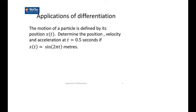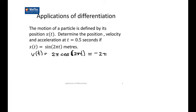All of these questions are the same. You need to find the distance function and the velocity function. The velocity function is the derivative, so it will be 2π cos(2πt). We need to find that when t is a half, so plugging in t equals a half using a calculator, the final answer will be negative 2π meters per second.